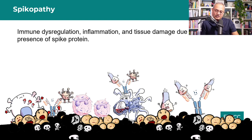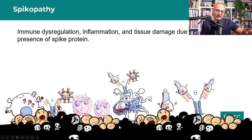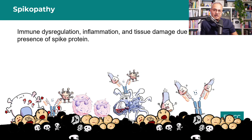Looking at the spikopathy pathology diagram from left to right: the floor represents some tissue — perhaps lung tissue or endothelium. Some cells in this tissue are in trouble: some have died, shown as black cells, and others are damaged. On the surface of these cells there is immune system response and inflammation causing cell death and damage.